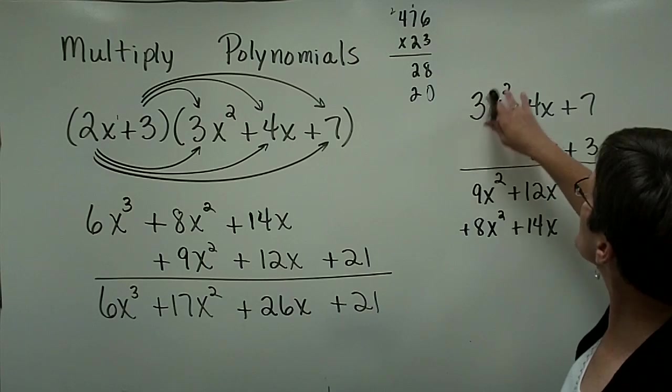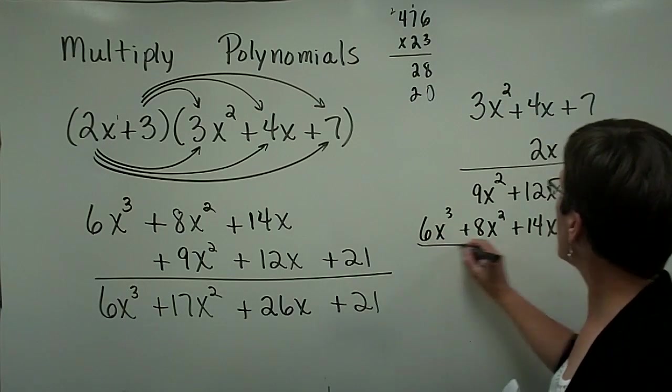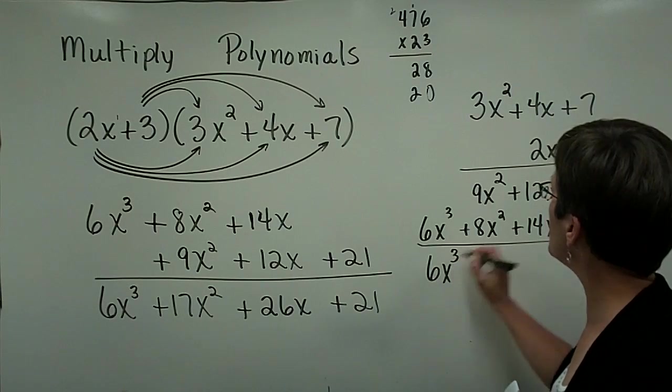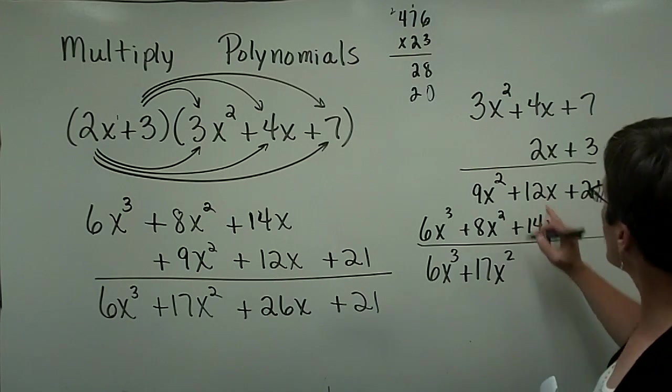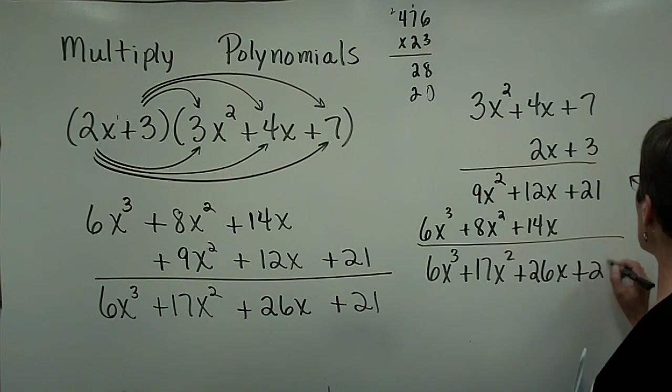And 2x times 3x squared is 6x cubed. And I'm ready to collect those like terms. So here I have 6x cubed, 9 and 8 is 17x squared, 12 and 14 is 26x, plus that 21.